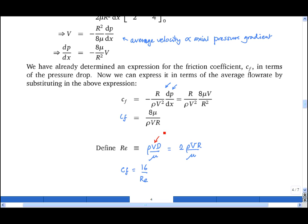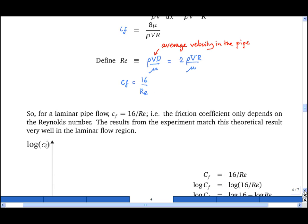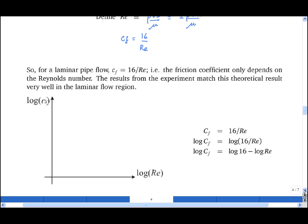And note that this Reynolds number is based on the average velocity in the pipe. So for a laminar pipe flow, we find that the friction factor cf is just 16 divided by the Reynolds number. So if we plot log of cf versus log of the Reynolds number, we get a straight line with gradient minus 1 and intersect with the log Reynolds equals 0 point of log 16. And this can be very easily checked experimentally.